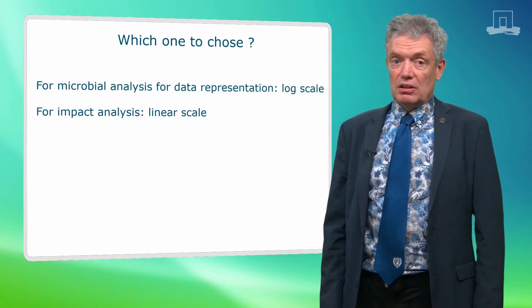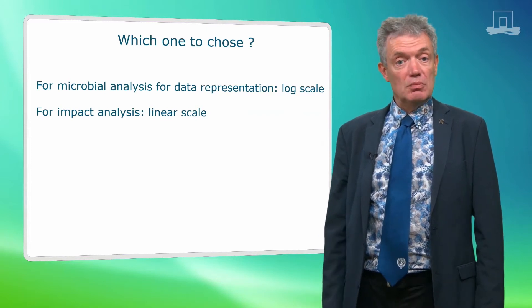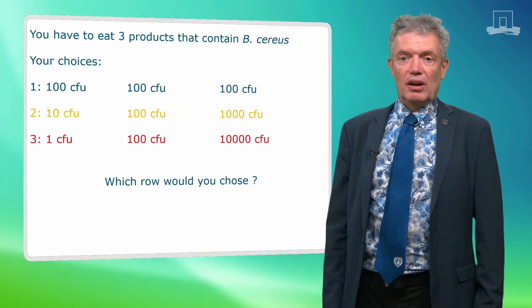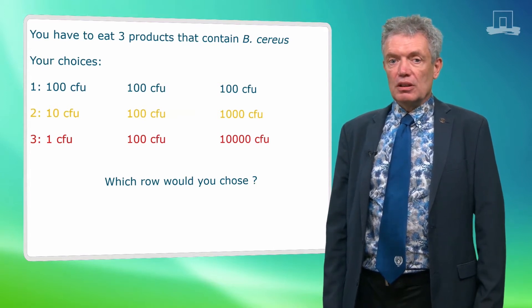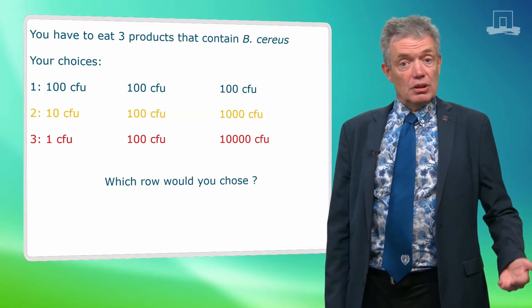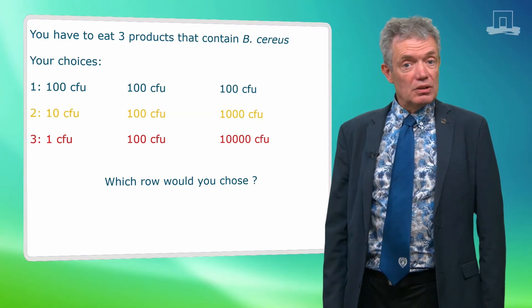For the impact of the distribution however, the arithmetic value or the linear scale is more relevant. We can illustrate this with a simplified example. Let's assume that you have to consume three products. And you can choose the products in row 1, in row 2 or in row 3. Which three would you consume?